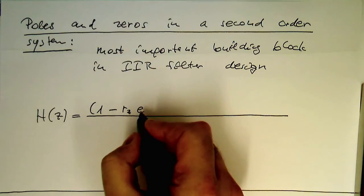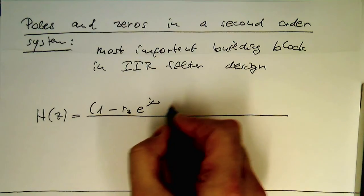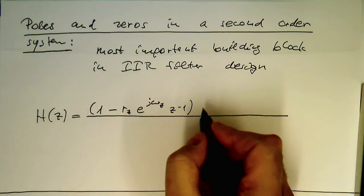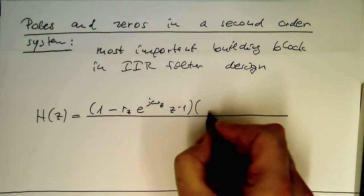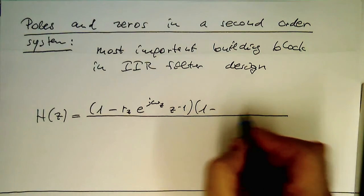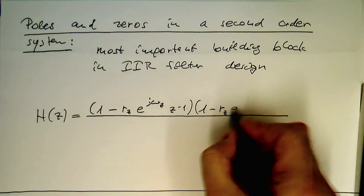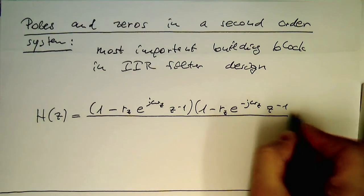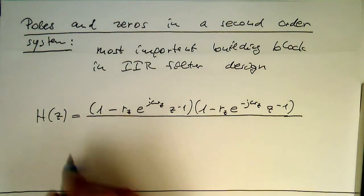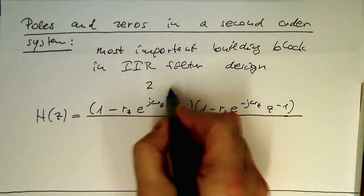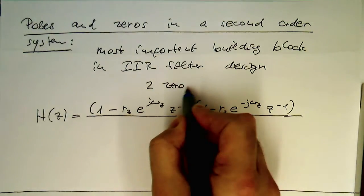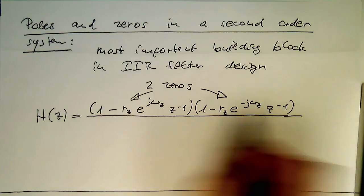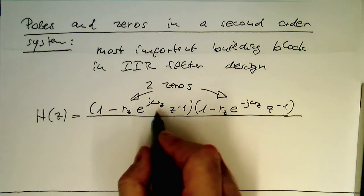H of z equals (1 minus R_z e^(j omega_z) z^(-1)) times (1 minus R_z e^(-j omega_z) z^(-1)). So we see these are two zeros here, two zeros, and they are two complex conjugated zeros.